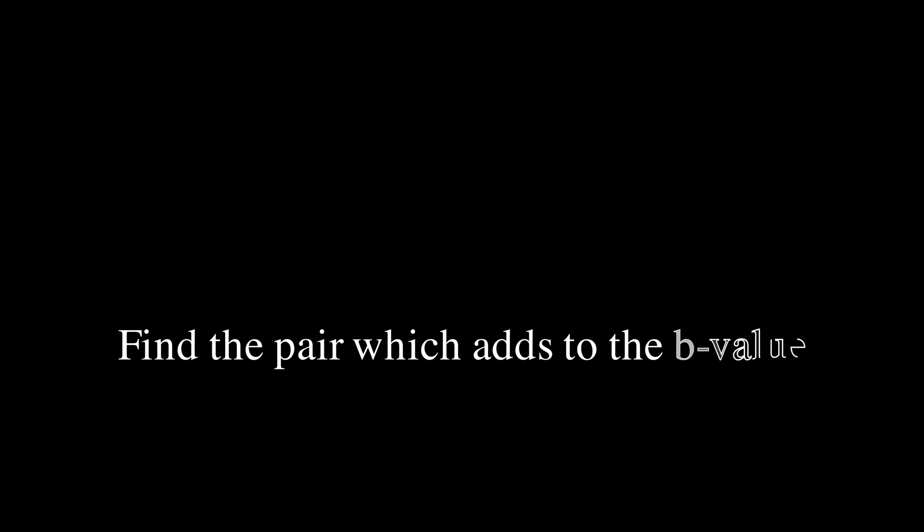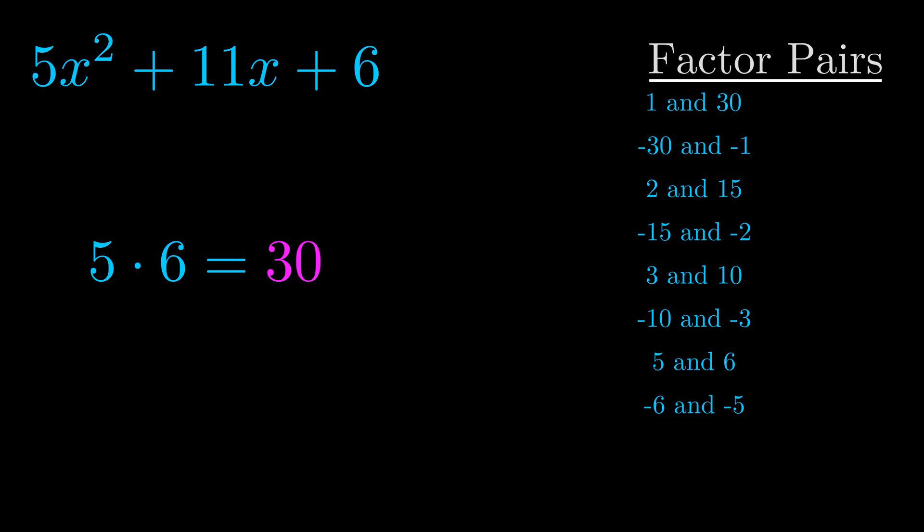The b value is the coefficient on the x term. That's the middle term, the one that we haven't done anything with yet. And really this is the only factor pair that we need.